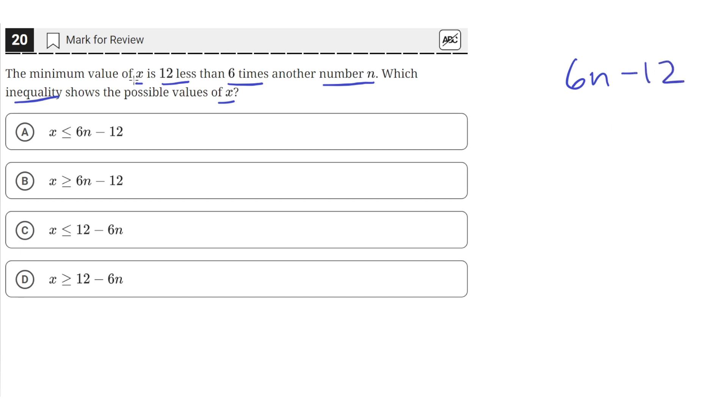And this quantity is the minimum value of x, which means x has to be this quantity or higher in order for this to be the minimum. So x has to be greater than or equal to this.